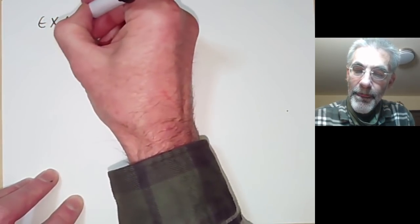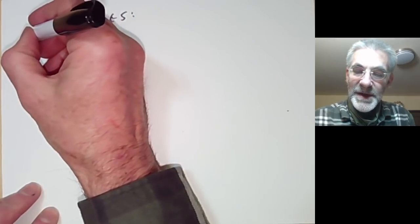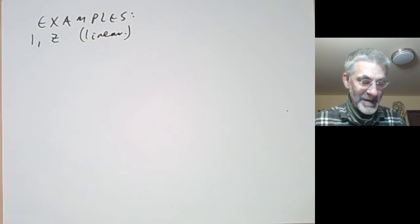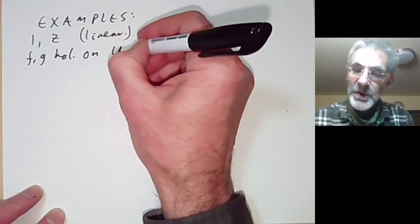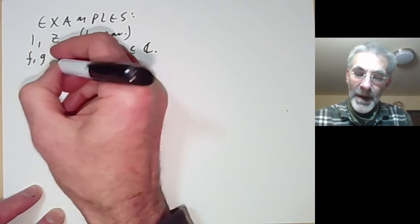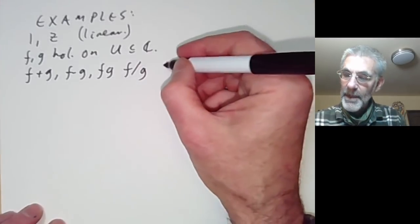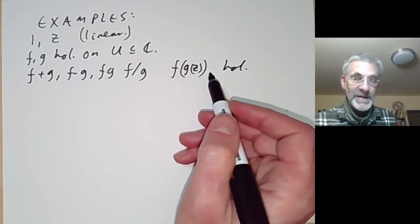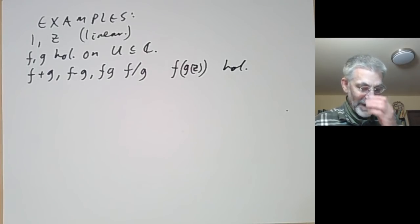Let's have some actual examples of holomorphic functions. The obvious examples are the constant function 1 and z — these are both linear in z, so they're certainly holomorphic. If f and g are holomorphic on some open set U in the complex numbers, then f plus g, f minus g, f times g, and f divided by g are also holomorphic, and so is the composition f and g. The proof of these is easy — you just take the usual proof from calculus or real analysis and copy it for complex variables.